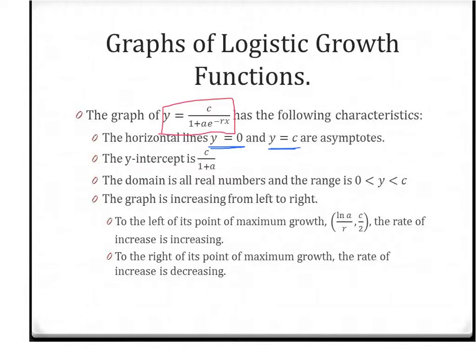We are also going to have a Y-intercept. Our Y-intercept is C over 1 plus A. And so that value is your Y-intercept. Your domain is going to be all real numbers because we're going to go left and right forever. But our range is only going to be between 0 and C, not equal to either of those since those are asymptotes.